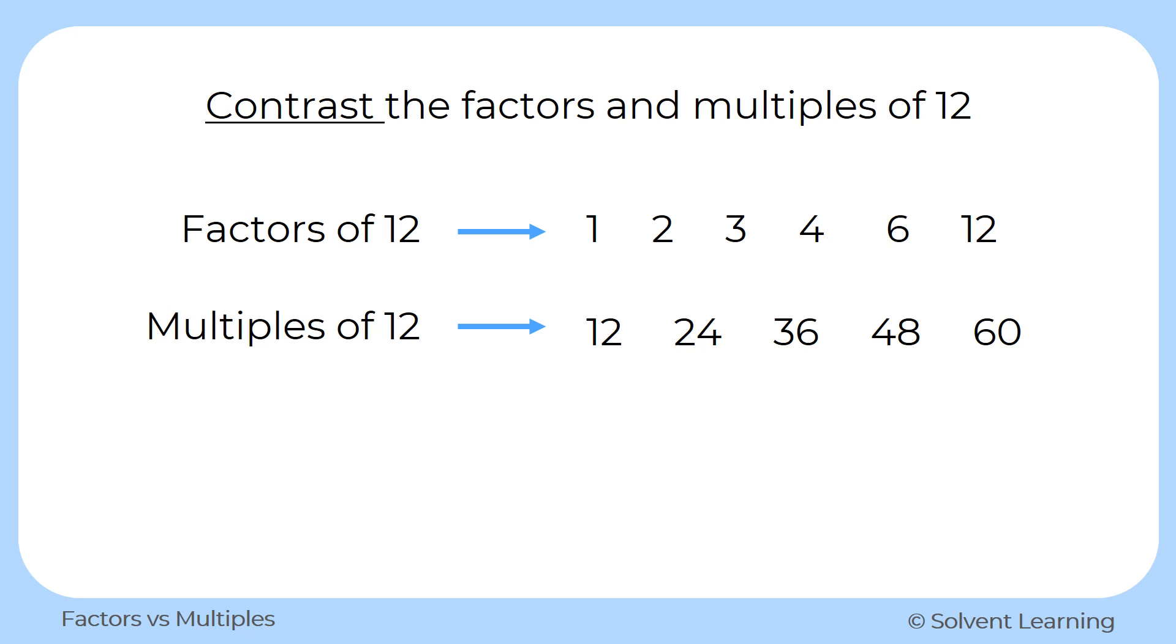Well, basically, all the other numbers are going to be different. So for the factors, we have the numbers 1, 2, 3, 4, and 6, none of those will appear as multiples. So that's something that's different.